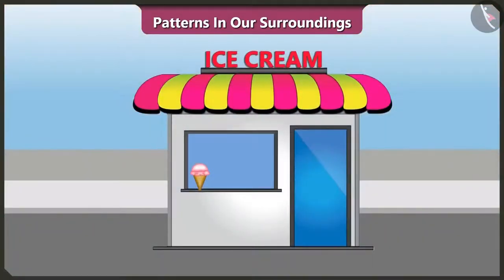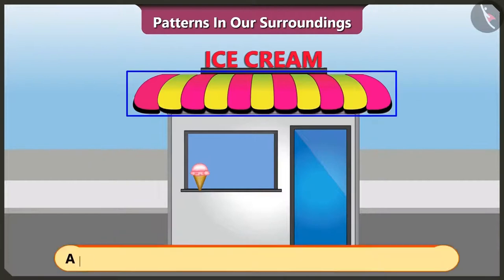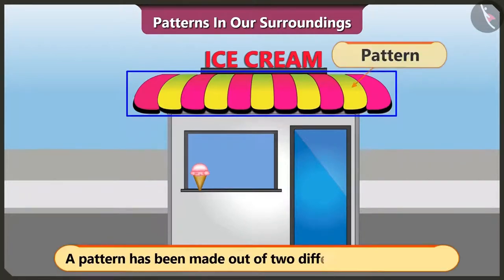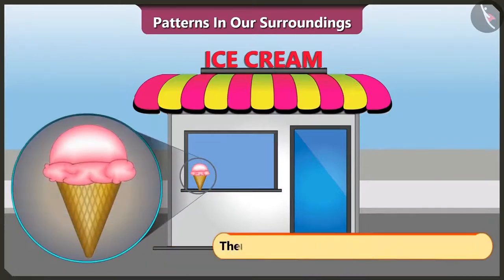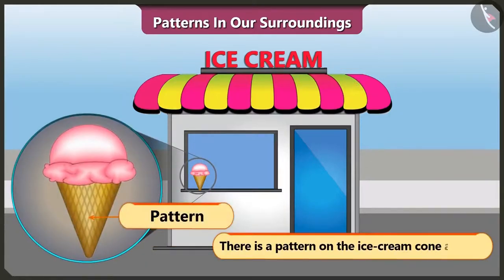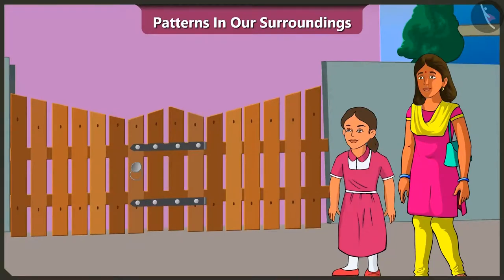Now look at the roof of this ice cream shop. Does it have a pattern? Yes, here two different color stripes have been used to make a pattern, and the ice cream cone also has a pattern. Yes Vinny, we talked all the way and reached home so soon.